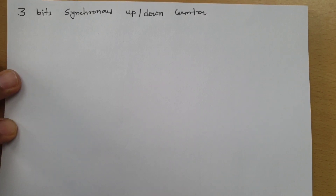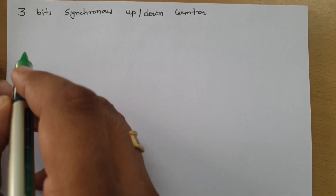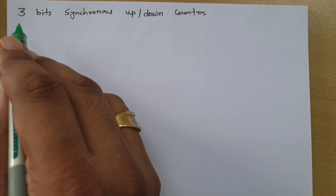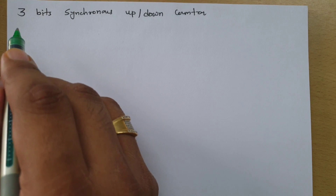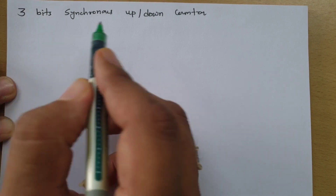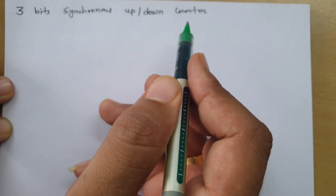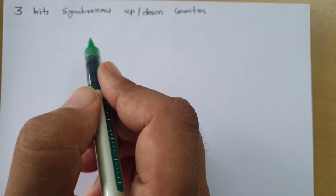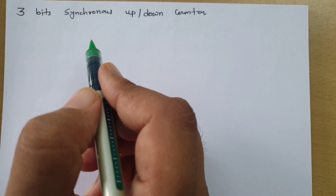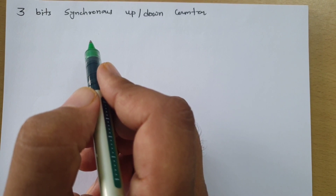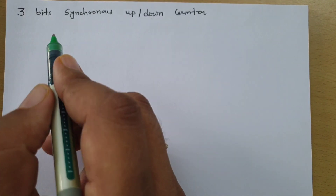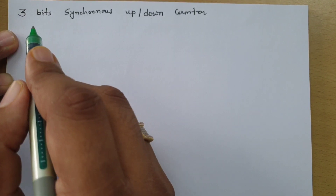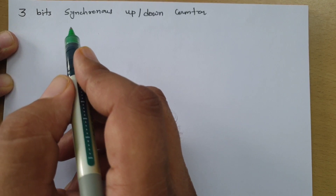Welcome to the digital electronics lecture series. I, Professor Itesh Dolakya, am going to explain a 3-bit synchronous up-down counter in this session. To understand this video, I request you to go through my previous videos based on the 3-bit synchronous counter and 2-bit synchronous counter.